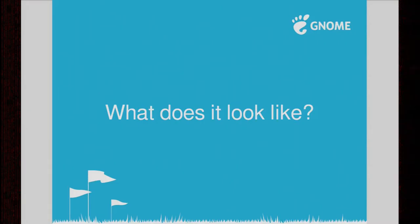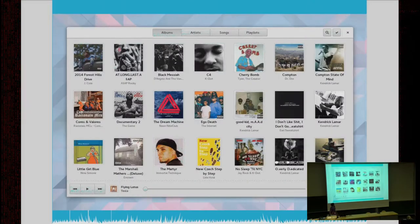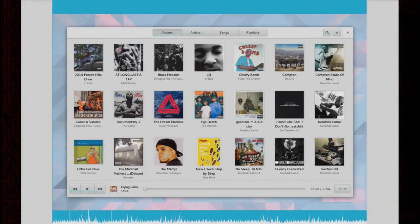Music is not the default in the main distributions yet, so you'd probably need to download it from your package manager. In the main view, we have stacks — the views where you can browse by albums, artists, songs, and playlists. And at the bottom you have the player bar.